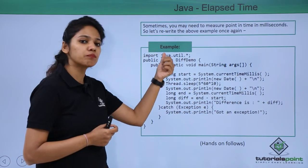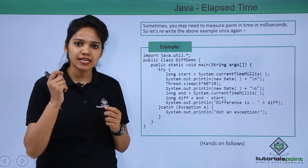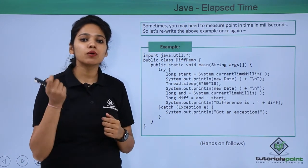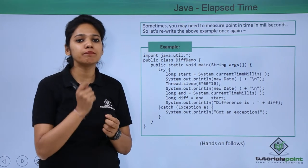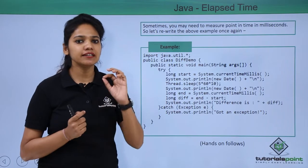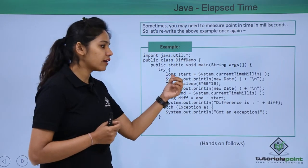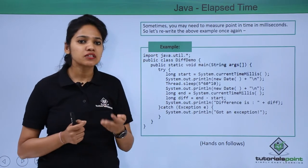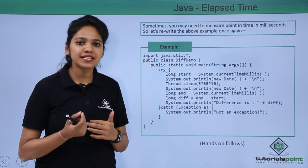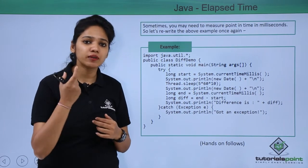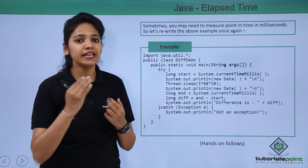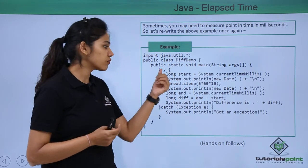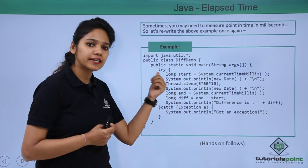We have first imported the package java.util and created a class called DifferenceDemo. This DifferenceDemo will enable you to find the difference between the milliseconds of the previous and the current date and time. We use a variable of type long. Until now we've been using int, string, boolean, and double, but the value received in milliseconds may be larger than int, so we need to store it in a long data type.